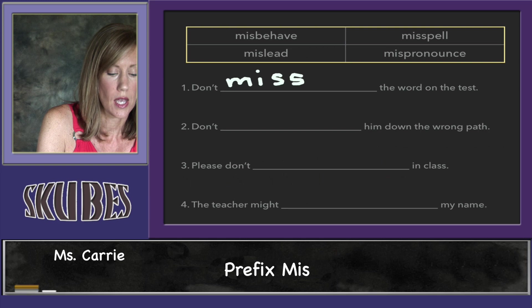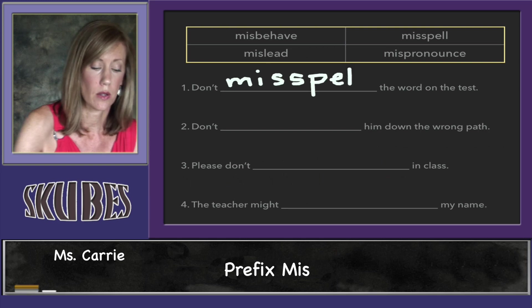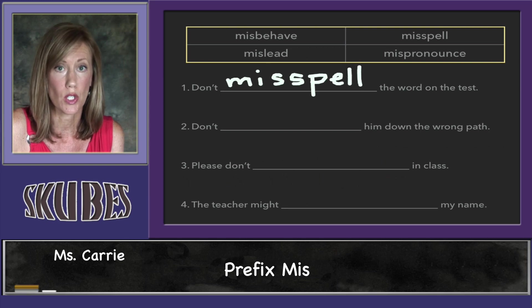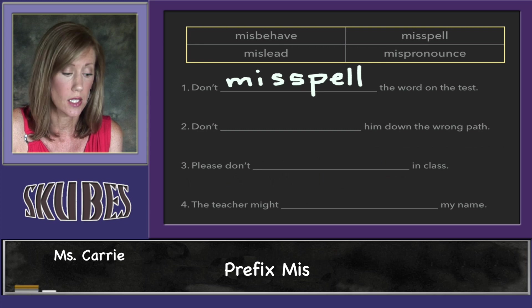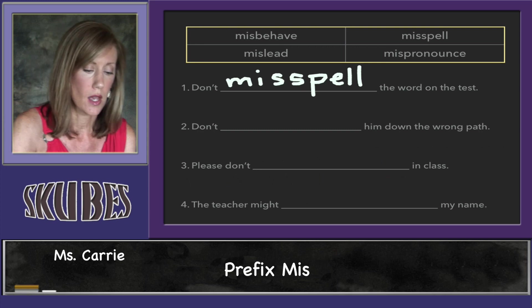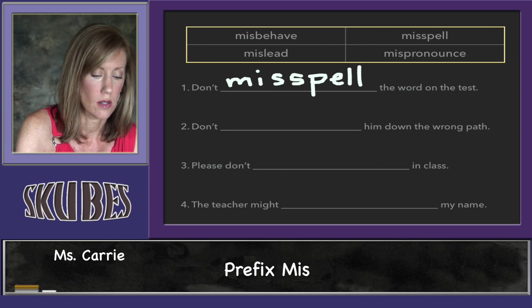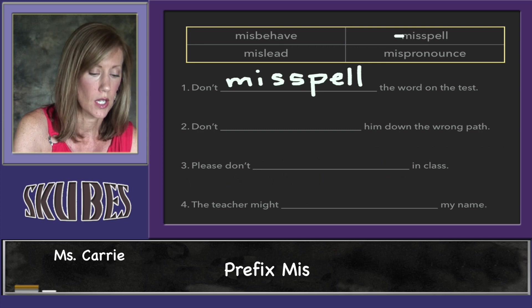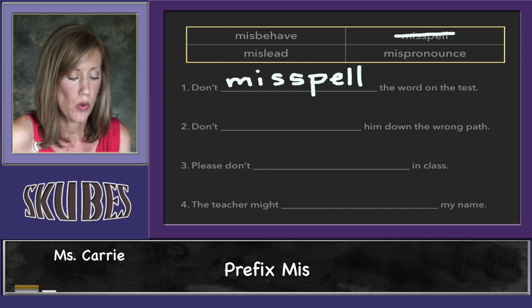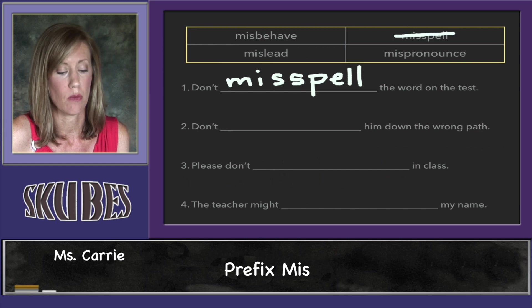That makes sense because 'misspell' means to spell something incorrectly, and you wouldn't want to do that on a test. Let's cross that out so we don't use it again. Number two says: 'Don't blank him down the wrong path.'